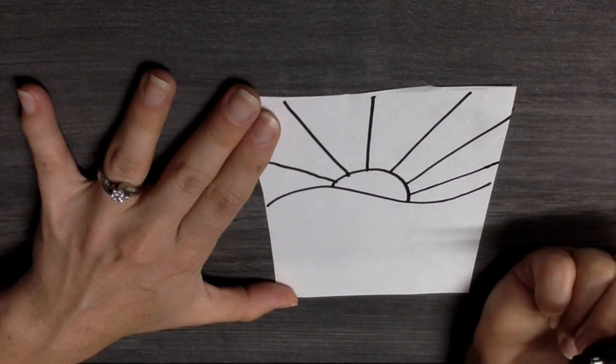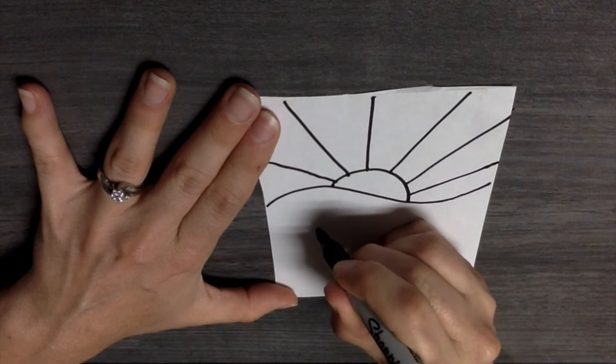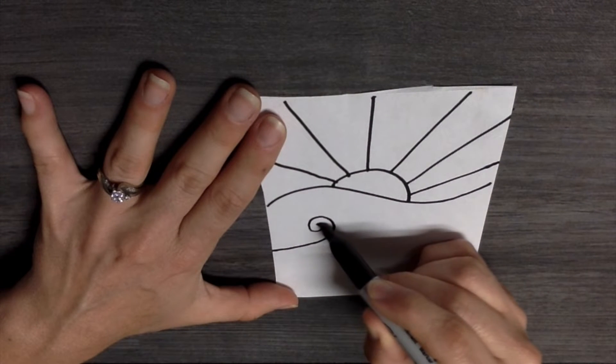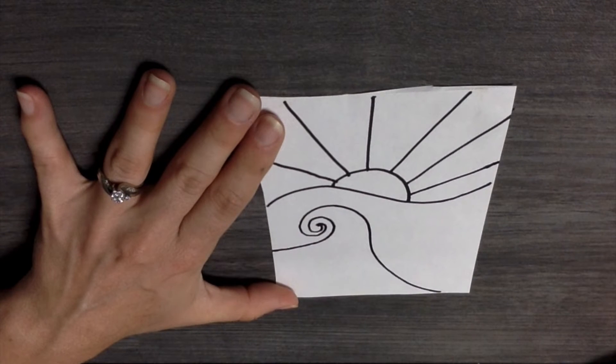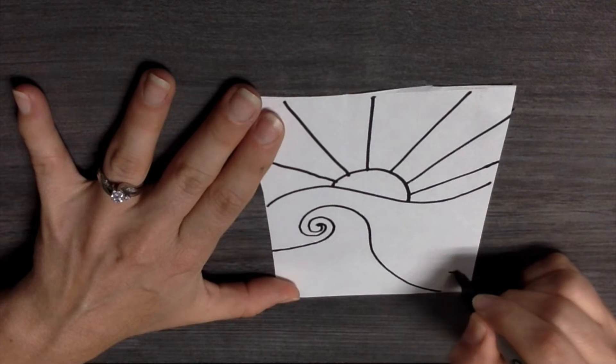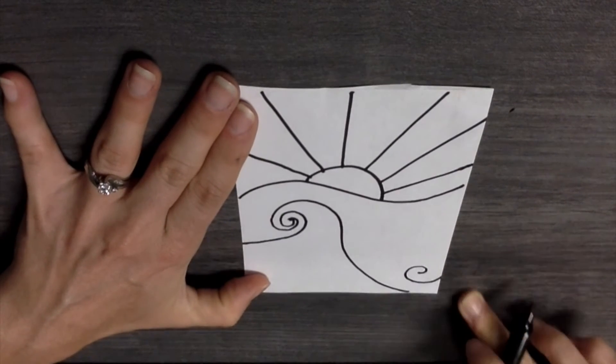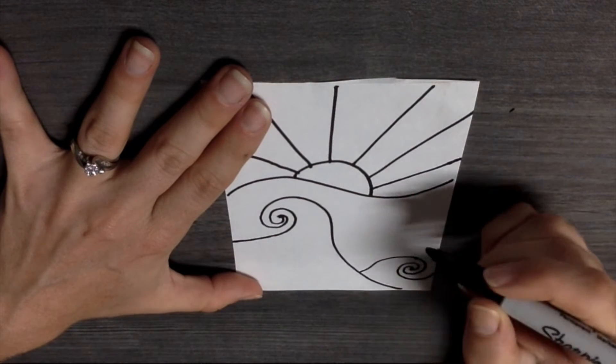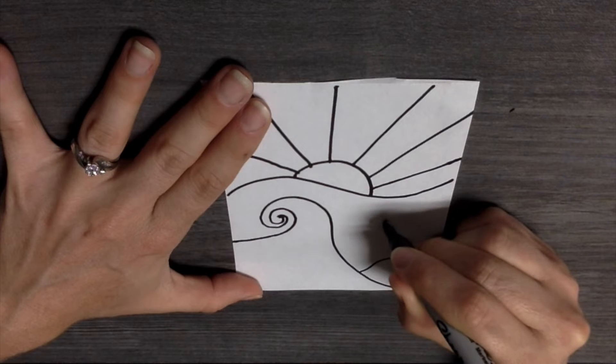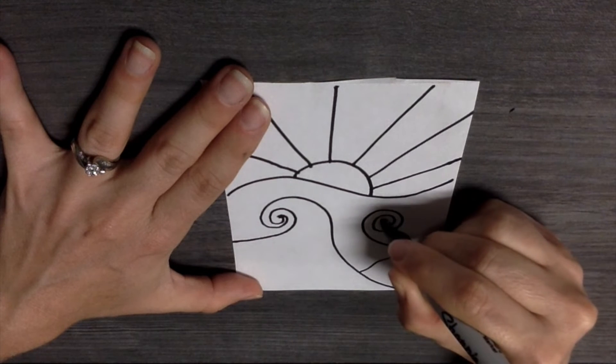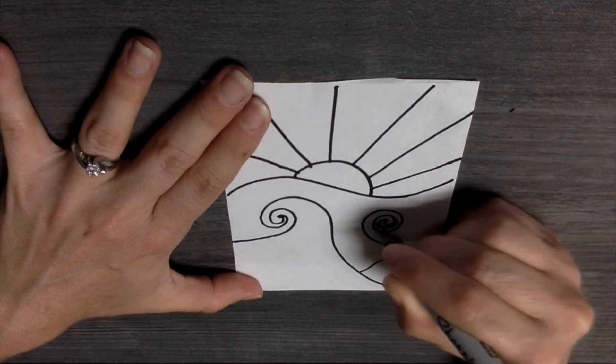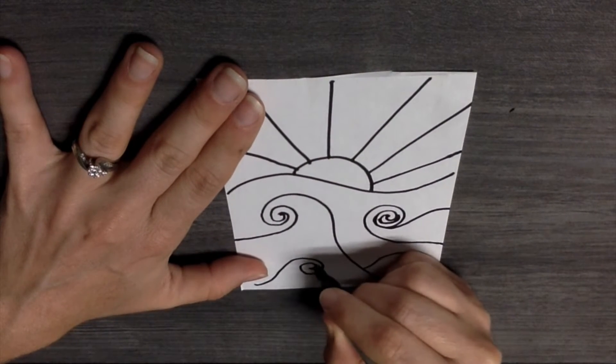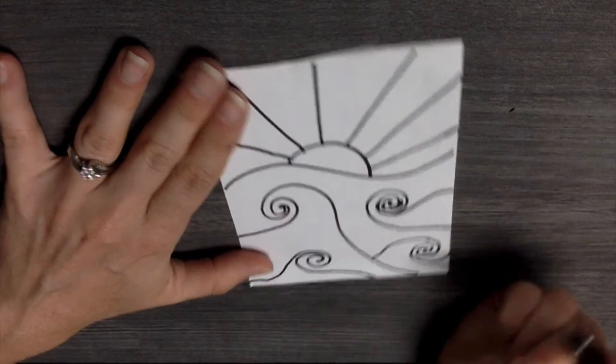Now we are going to start with a spiral for the little waves. Going to do one spiral here. Start back in the middle. Come back this way. We are going to do another spiral right here. Then start back in the middle and come around the other way. Going to add another one here. And my last one over here. You can put your spirals and waves wherever you want them.